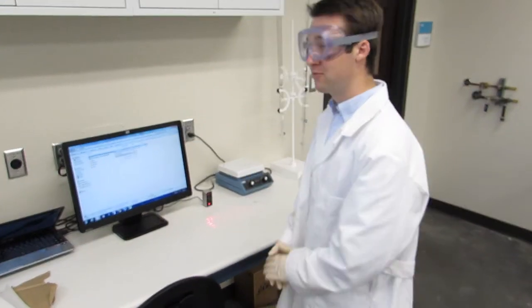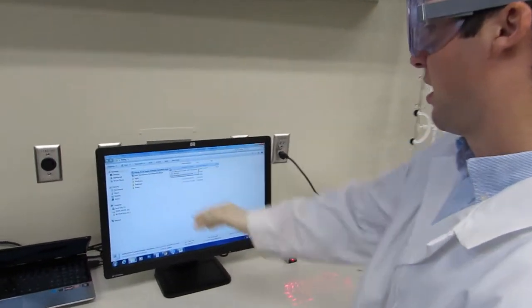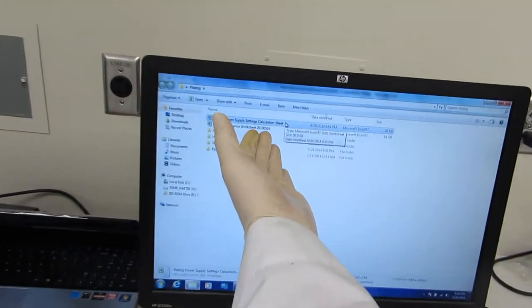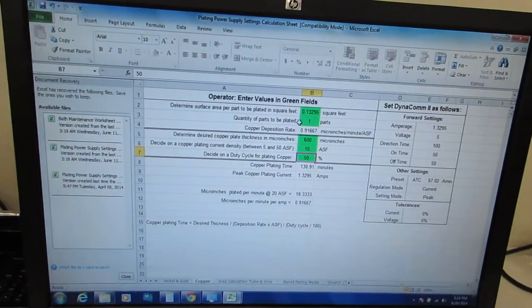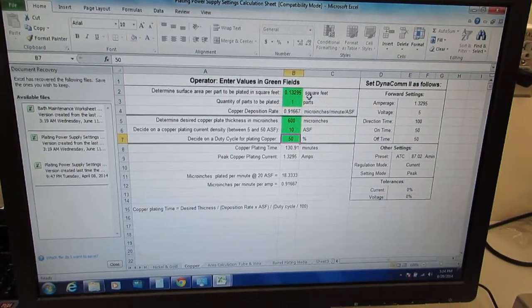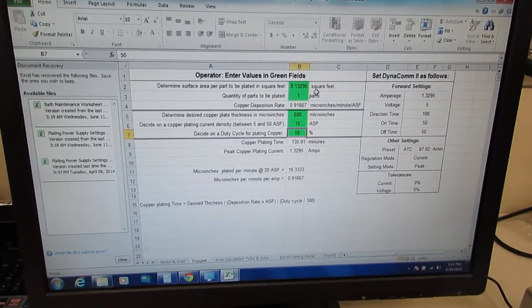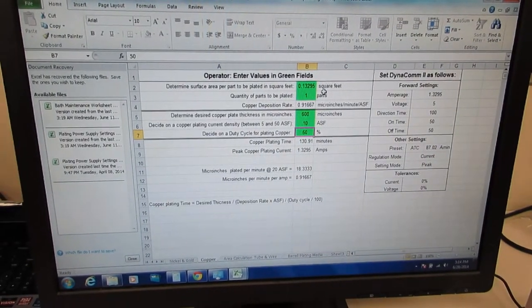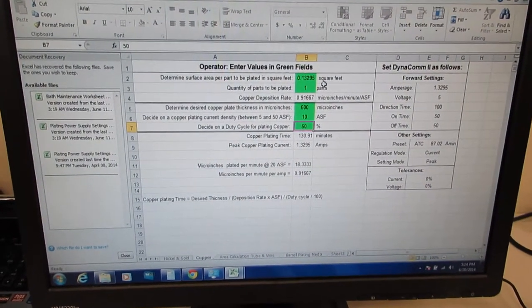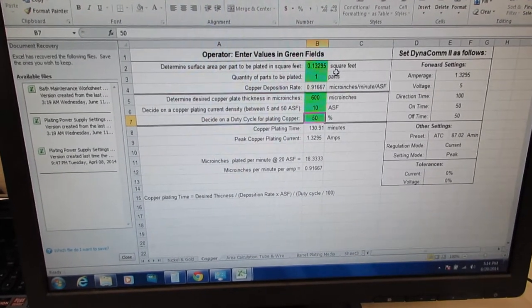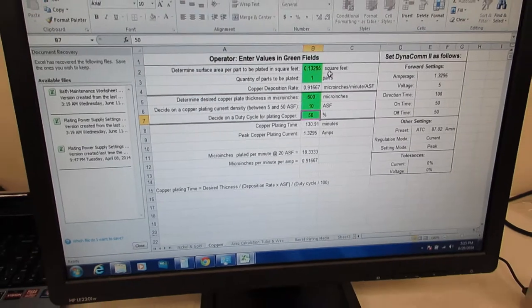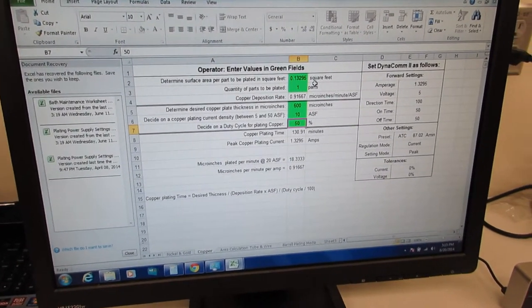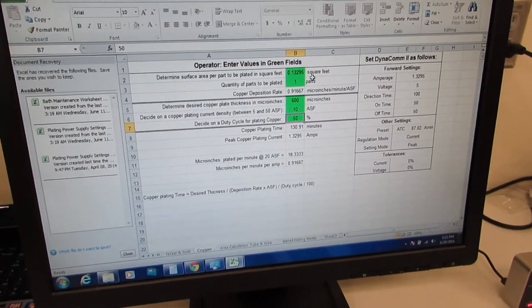To set it up for the electroplating, you'll want to go to this Excel worksheet, plating power supply settings calculation sheet. In here, I've already entered in the square feet area of the board. Now you want to make sure you calculate this for both sides of the board. And if you have a thick board, you want to make sure to calculate for the outside edge of the board and the area of any vias you have.